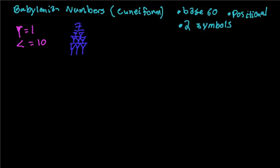What if we want to do another number? Let's say 23. Well, we need 2 of these — the tens symbol — so that'll be 20. And then we draw 3 more ones. And that's equal to 23. That pattern continues all the way up to the number 59.